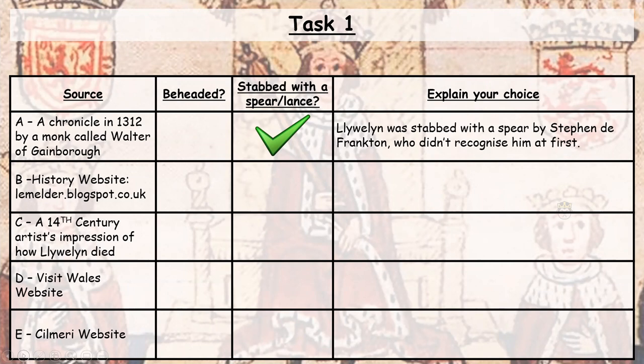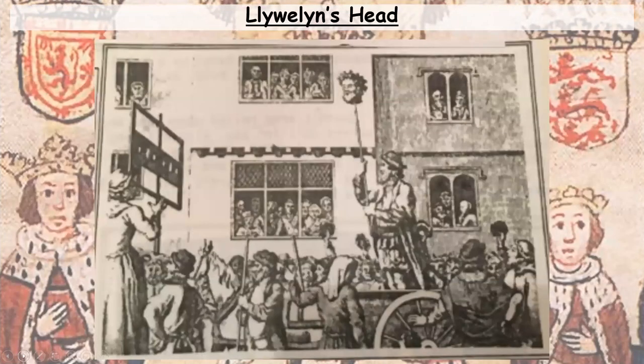We should have completed that task now and we'll move on to the next. The picture we showed as a starter — it is Llewellyn's head being displayed. There are so many people there because London was a city, so we think this must be while it's been paraded in London. It's put on the end of a pike or a long spear to be displayed so everyone can see it, in celebration that they had defeated the Prince of Wales, Llewellyn.